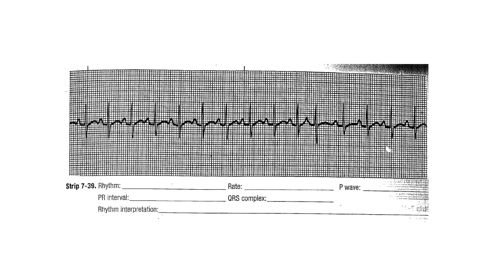In 7.39, this patient is regular with a heart rate of 136. There are P waves before each QRS. The PR interval is 0.16 to 0.20 - measured right before the P to right before the QRS. The QRS is 0.06 to 0.08, normal, coming from the SA node. Because the heart rate is greater than 100, this is sinus tachycardia with one PAC.